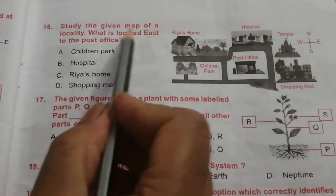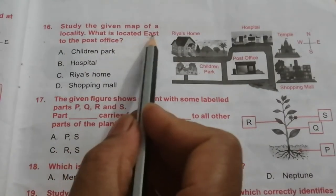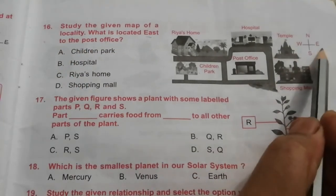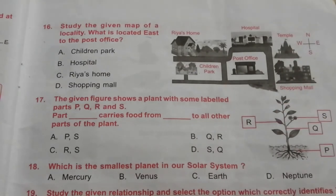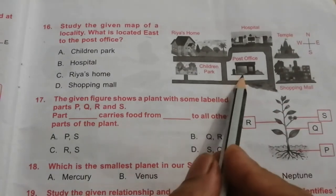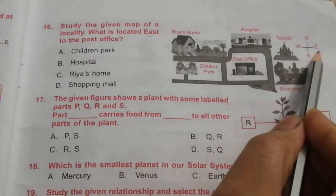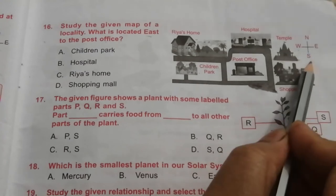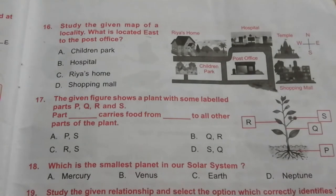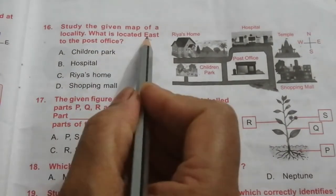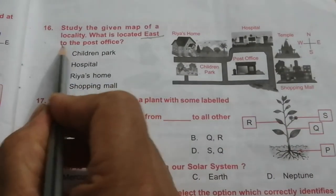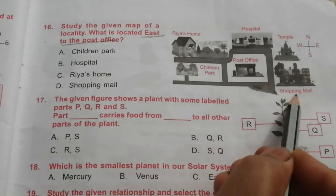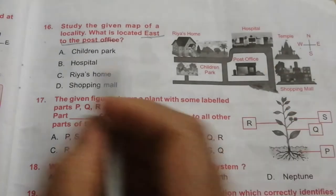Question 16: Study the given map of a locality. What is located east of the post office? East is on the right side, west is on the left, south is at the bottom, and north is at the top. The post office is here, and its right side is east. The answer is D: shopping mall.